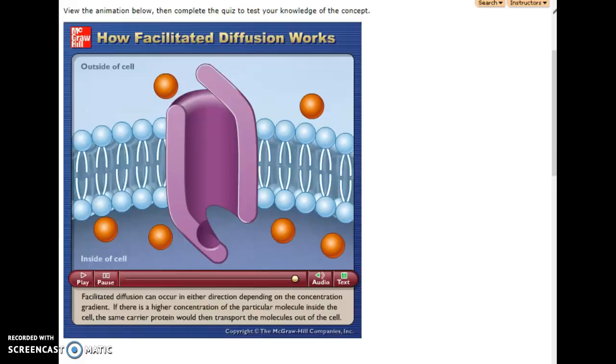The next type of transport we're going to talk about is one that actually requires energy. We're now going to talk about active transport processes. Active means you require energy. You require the energy because you're going from a low concentration to high concentration. Sometimes they say you're going against the concentration gradient. Sometimes they say you're going up the concentration gradient.